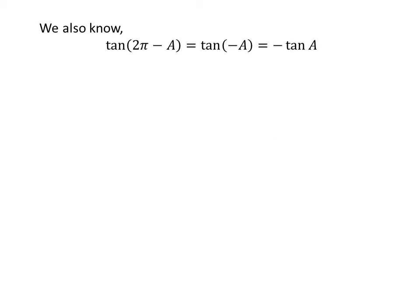We know the value of tangent of x repeats after the interval of 2 times pi. So tangent of 2 times pi minus a is equal to tangent of minus a.